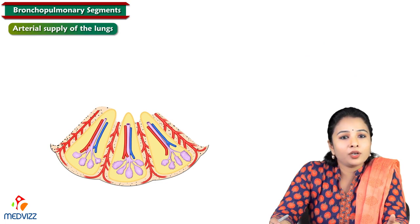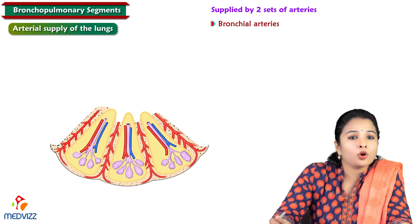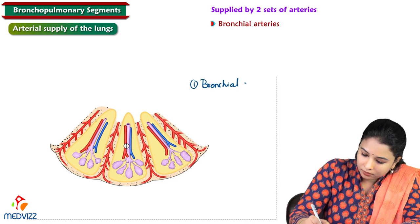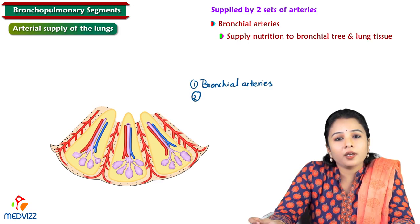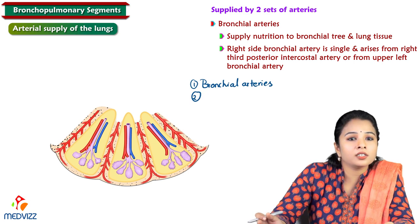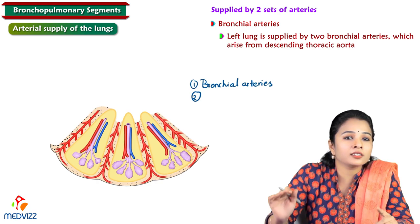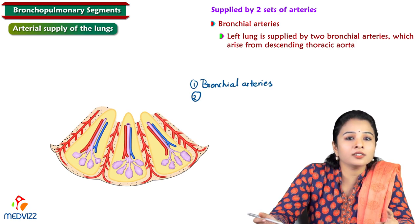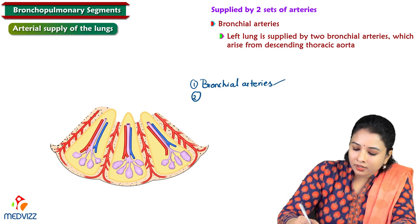The lungs are supplied by two sets of arteries. The bronchial arteries supply nutrition to the bronchial tree and lung tissue. The right bronchial artery is single and arises from the right third posterior intercostal artery or from the upper left bronchial artery. The left lung is supplied by two bronchial arteries, which arise from the descending thoracic aorta.